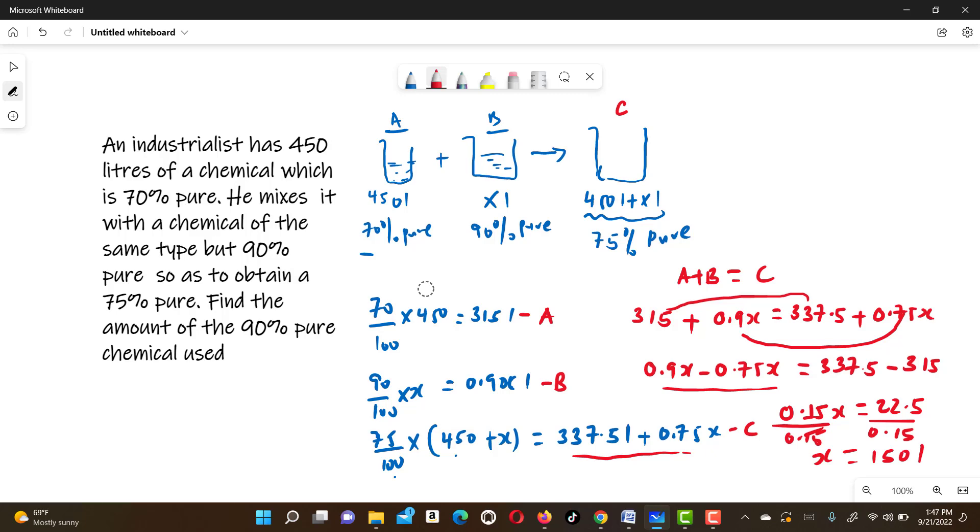So the amount of chemical B in liters is 150.